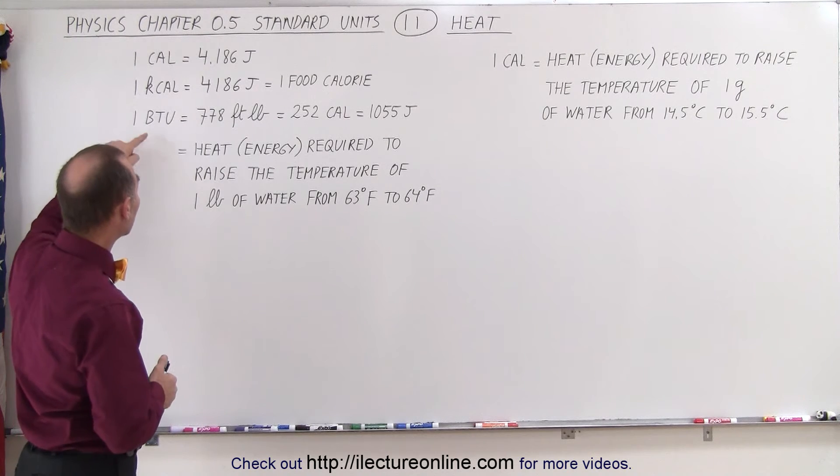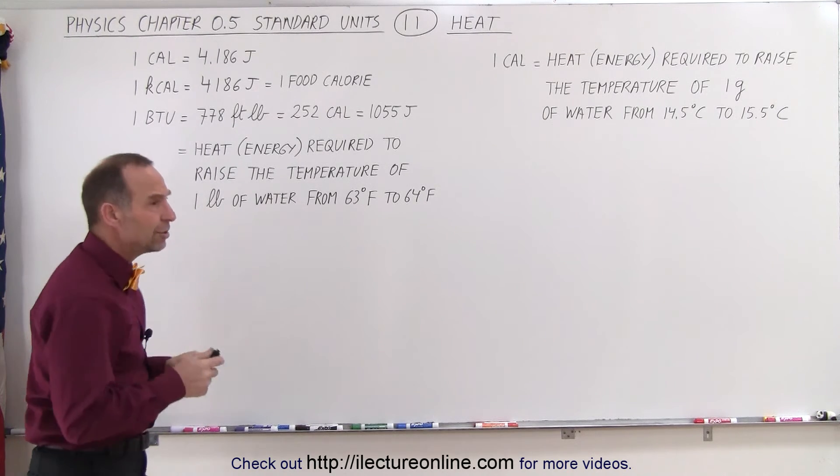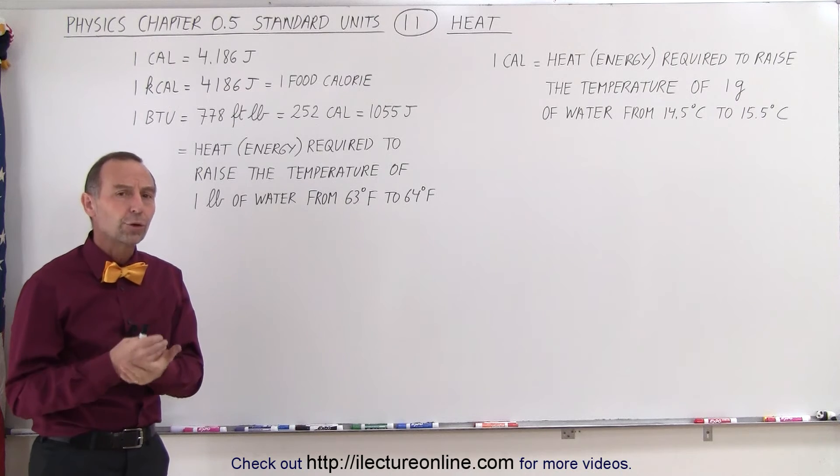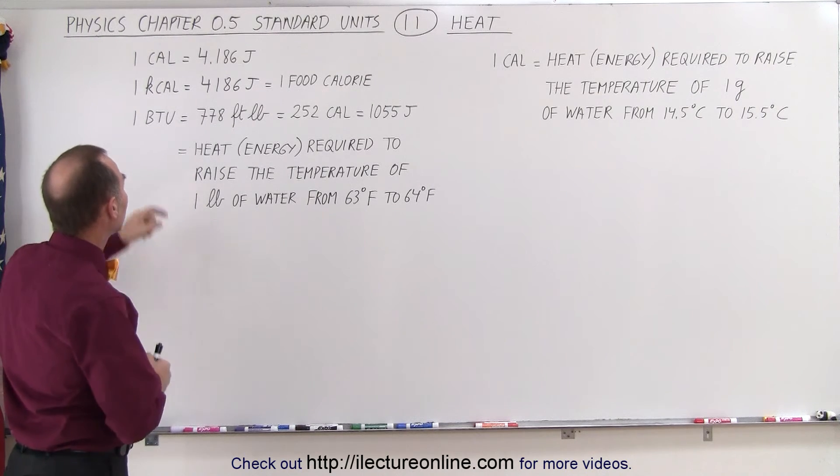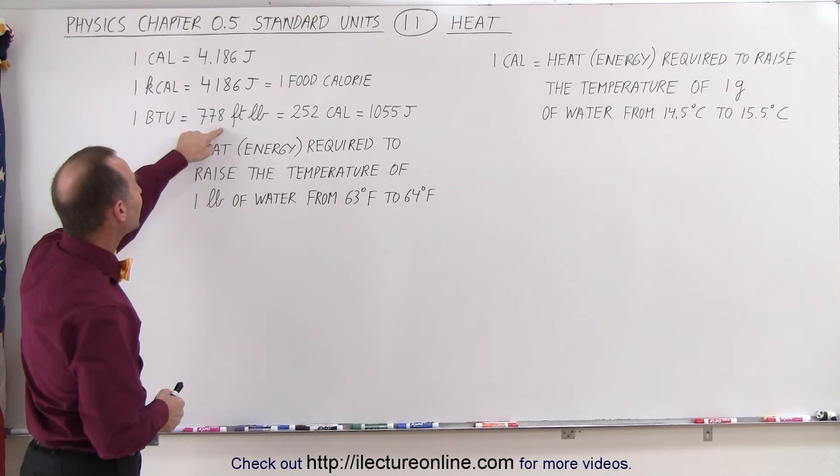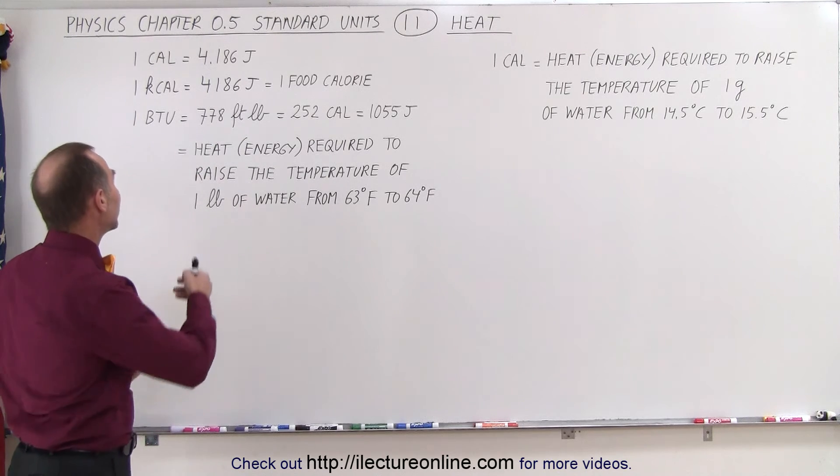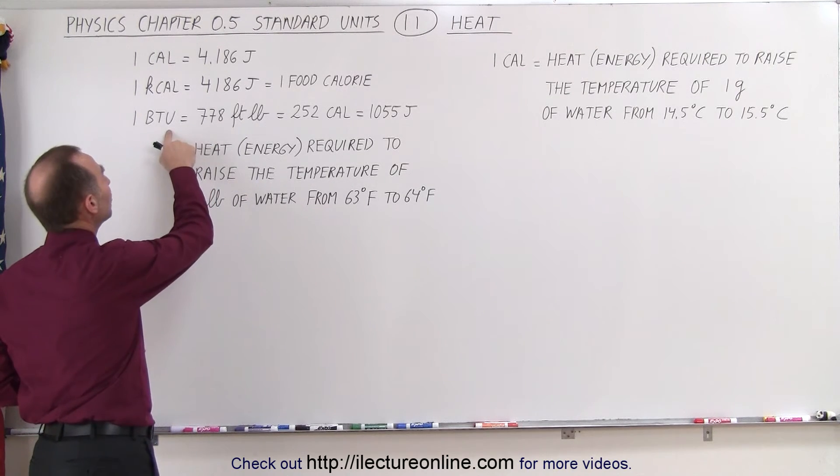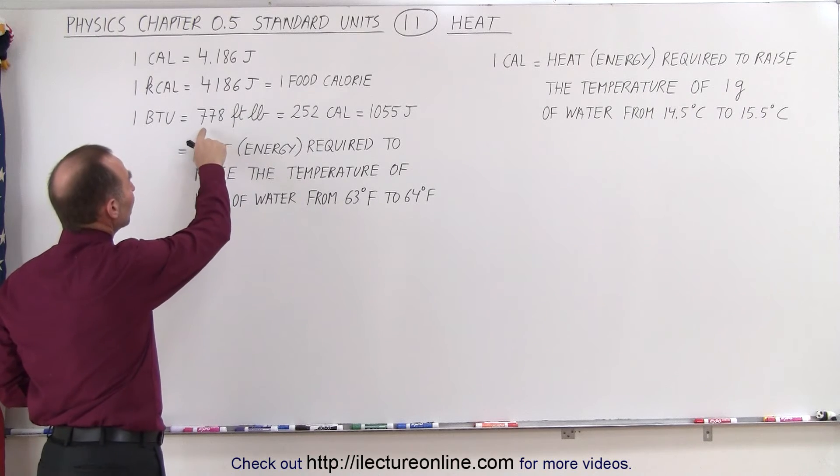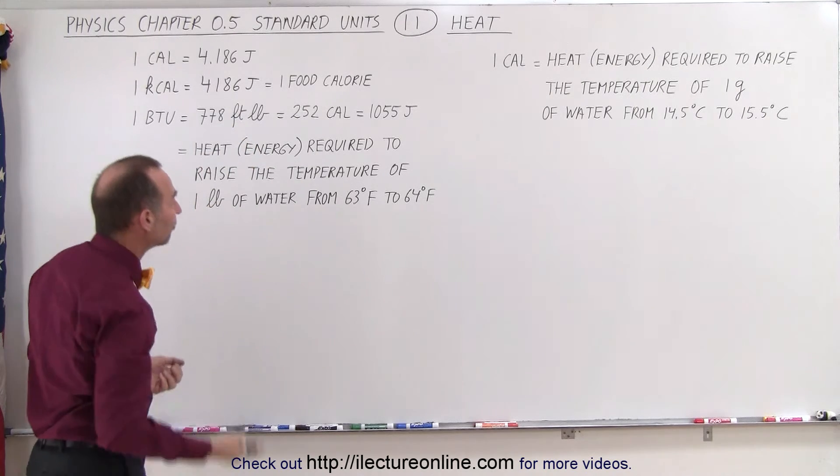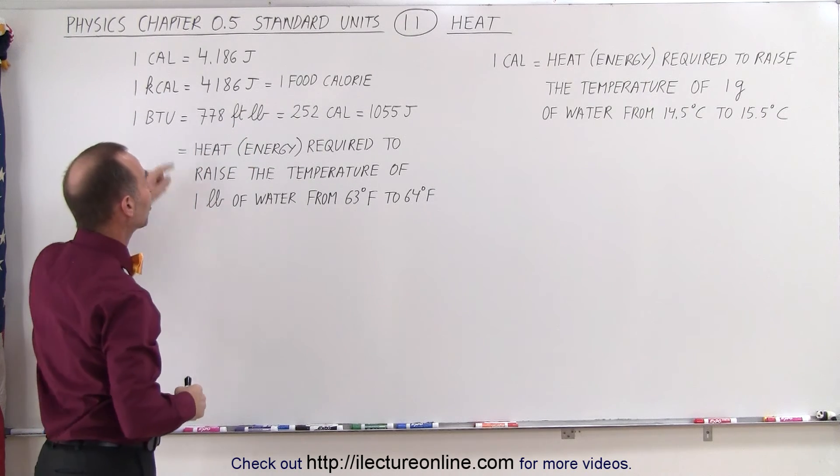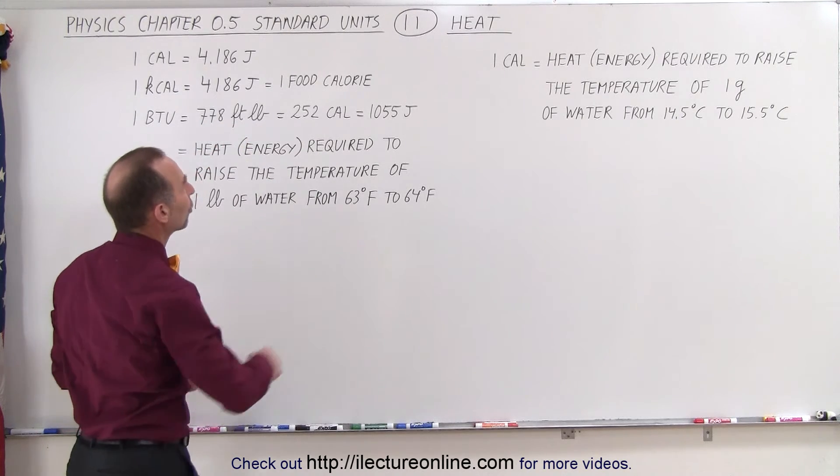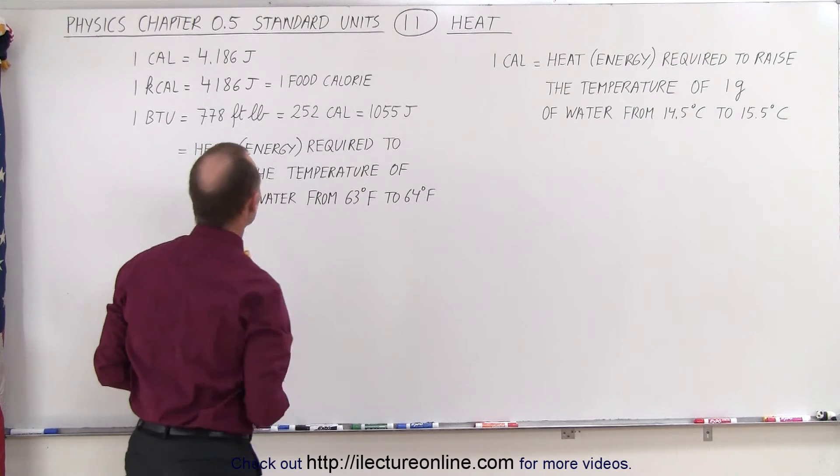We also have the BTU, which stands for British Thermal Unit. The British Thermal Unit is equal to 778 foot-pounds, meaning the energy in 1 BTU allows you to lift 778 pounds one foot off the ground. It is equivalent to 252 calories or 1055 joules.